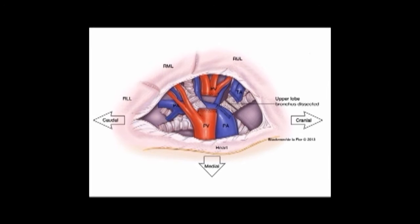Now you have divided all of your hilar structures going to the right upper lobe — the bronchus, the artery, and the vein. Now that these have all been divided, all that remains is the fissure. The fissure is stapled from the utility port beginning anteriorly towards the posterior area, angling upwards to preserve the superior segment of the right lower lobe. Once the fissure has been divided, the specimen is placed into an endocatch bag and removed through the utility port.